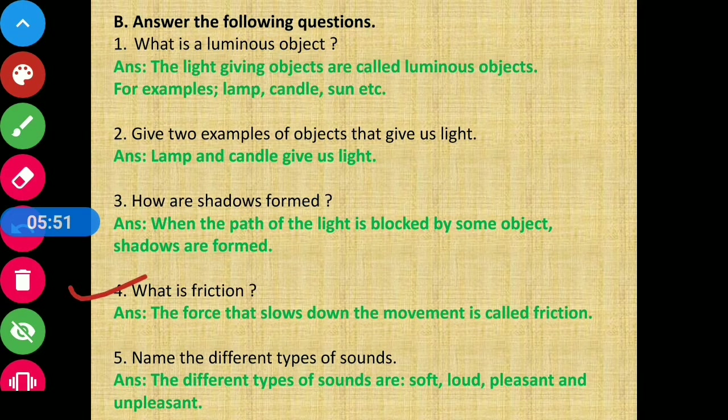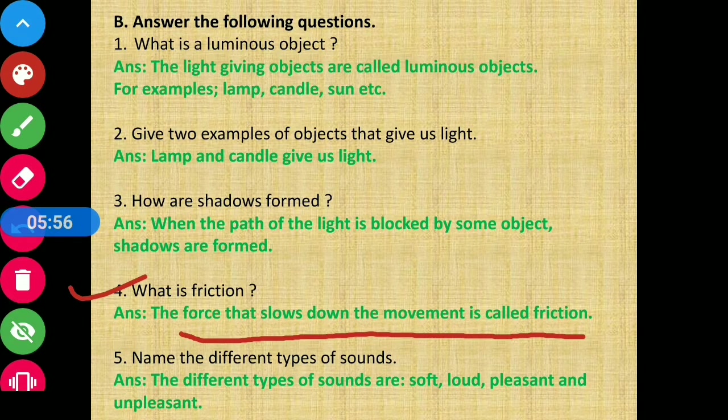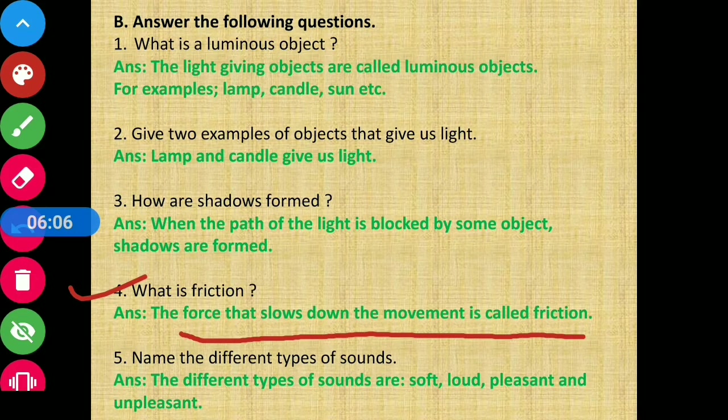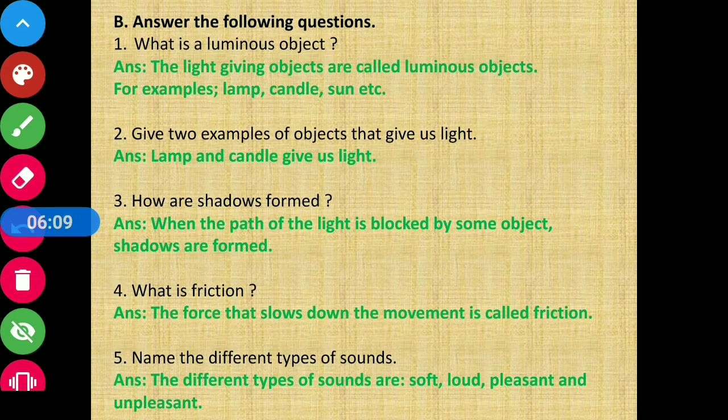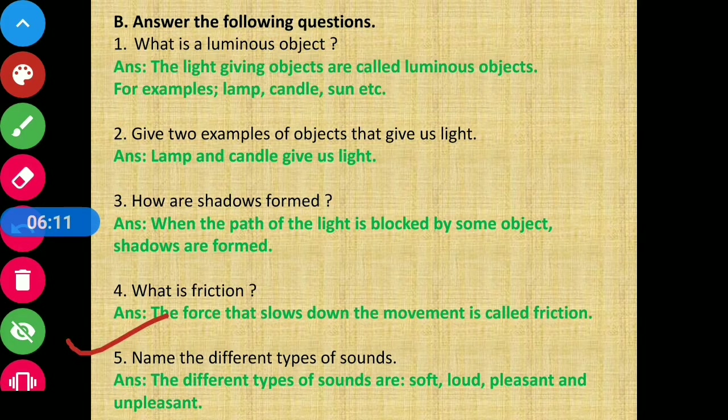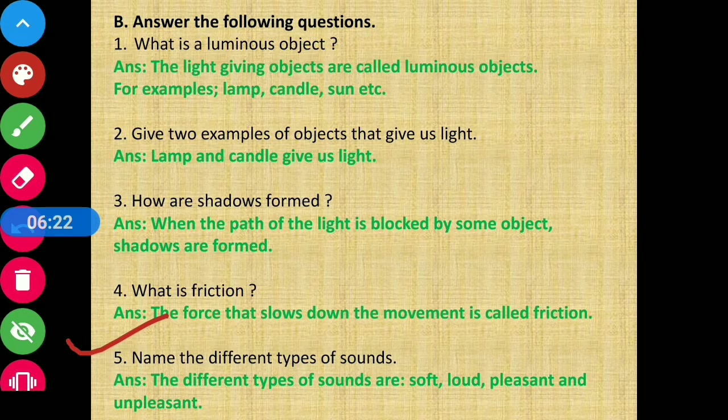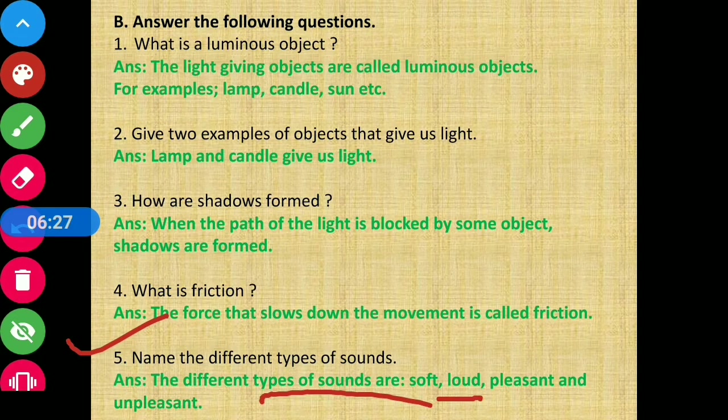Next question: What is friction? The force that slows down the movement is called friction. Wo force jo kisi bhi cheez ke movement ko slow kar deti hai, us force ko kaha jata hai friction. Question number five: Name the different types of sound. We know there are four types of sound. The different types of sounds are: soft, loud, pleasant, and unpleasant.